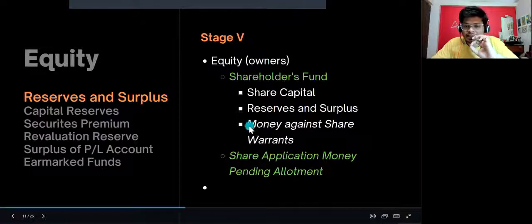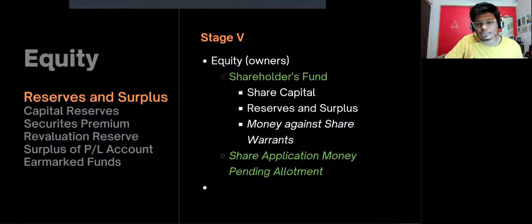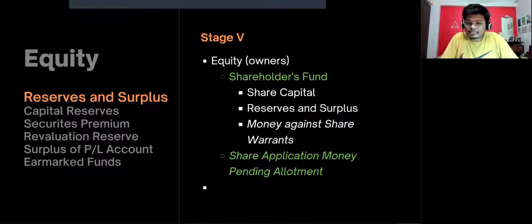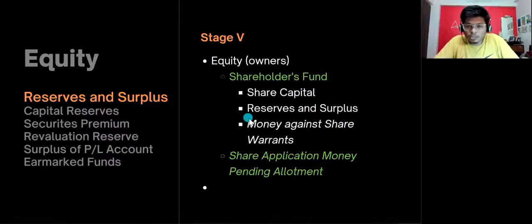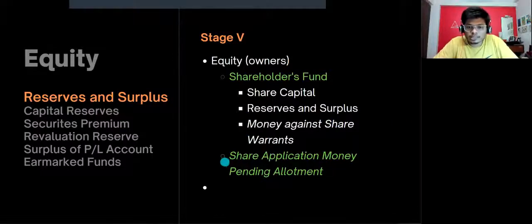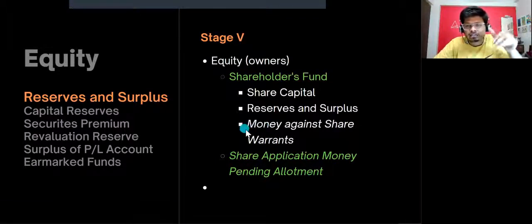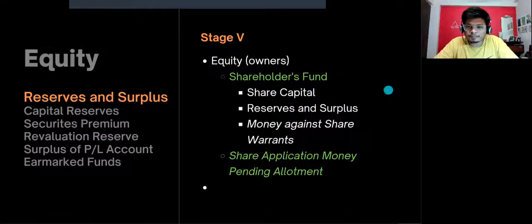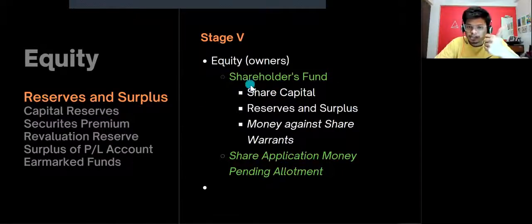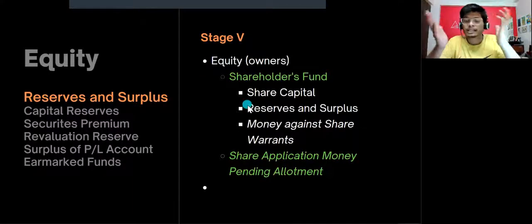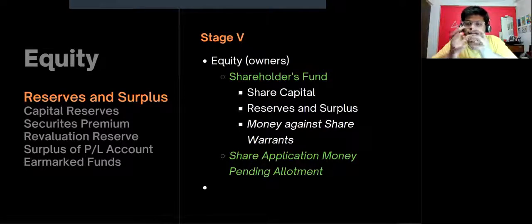Share application money pending allotment and money against share warrants are very rare items — these occur when shares are issued but not yet allotted by the balance sheet date, so don't worry too much about them. The two main important things within equity are share capital and reserves and surplus. For the format, equity has shareholders' fund, within which there is share capital, reserves and surplus, and share warrants.